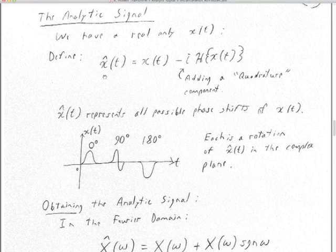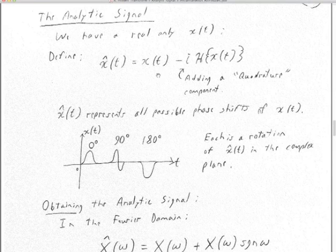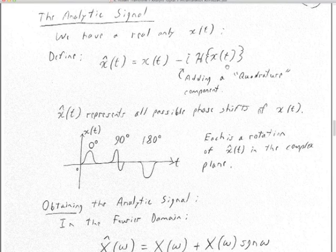X-hat is a signal that, instead of being just real, is complex. We make the real part equal to the input x, and the imaginary part minus the Hilbert transform of x. This Hilbert transform is taken on the time axis, not the frequency axis. Having a complex signal x-hat, we call that an analytic signal. What's analytic about it is that it represents all possible phase shifts of x — it's not adding any information, it just makes it easier to work with.